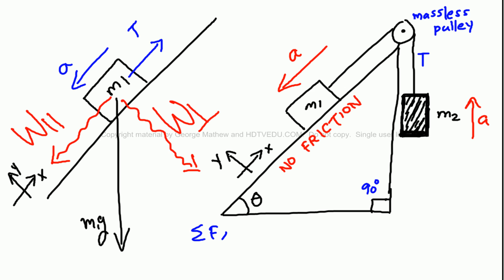Net force along the horizontal equals M1A. Bigger force minus smaller force equals net force. So we say W parallel minus T equals M1A.